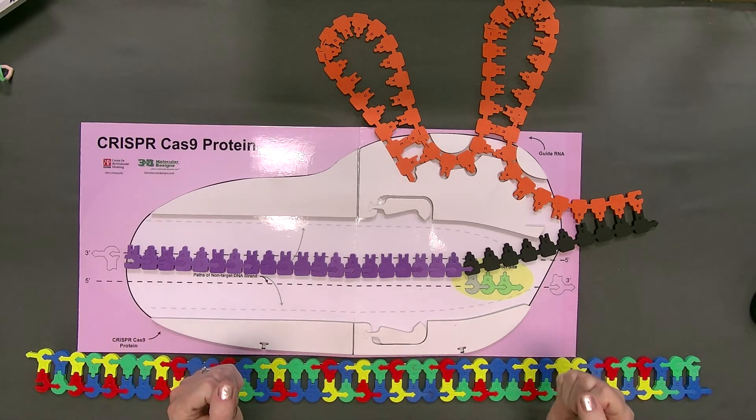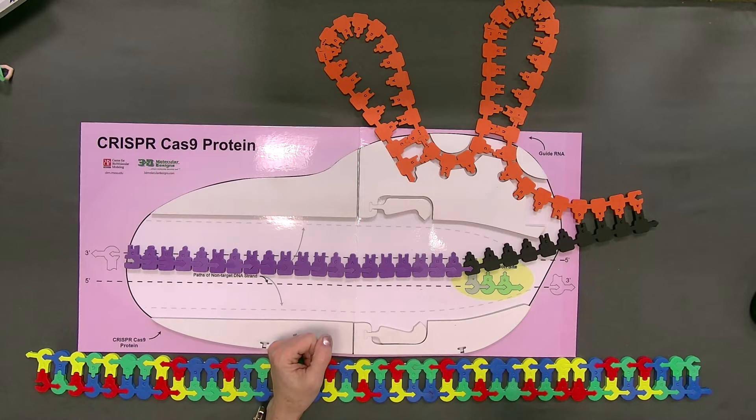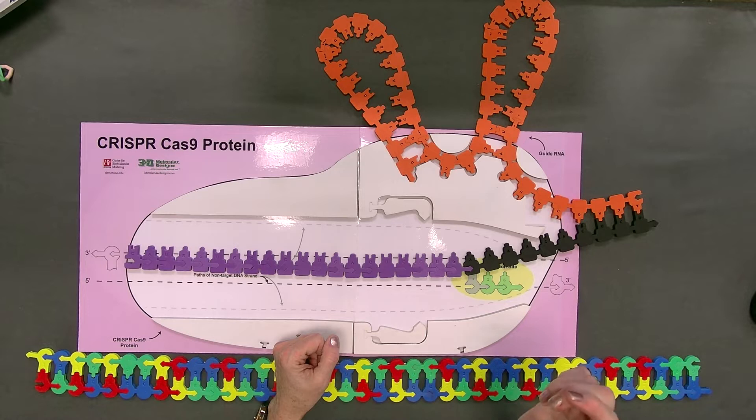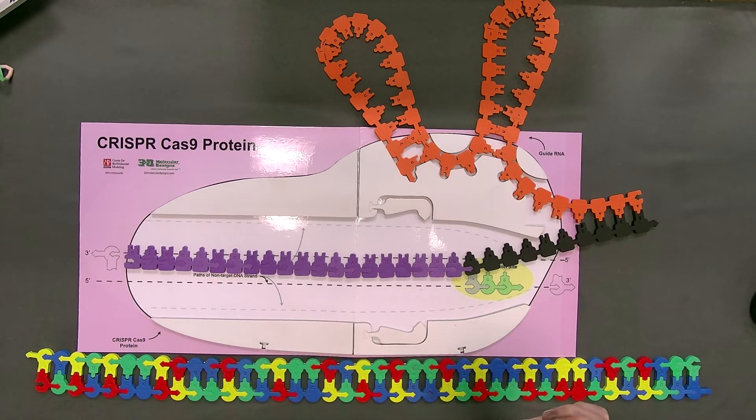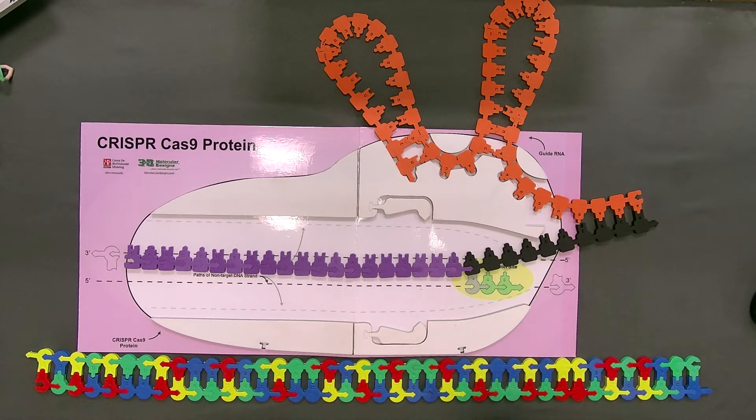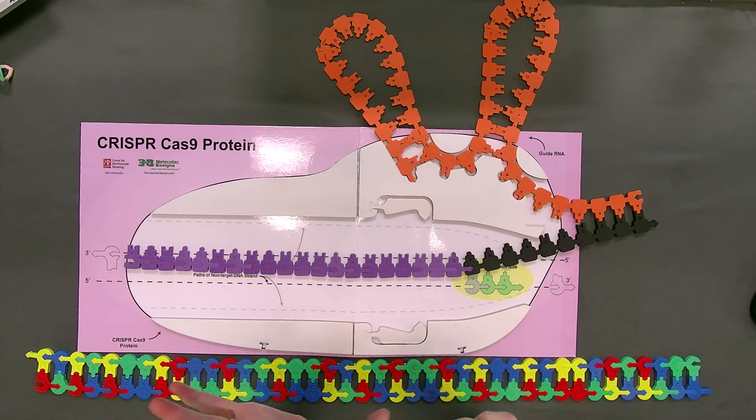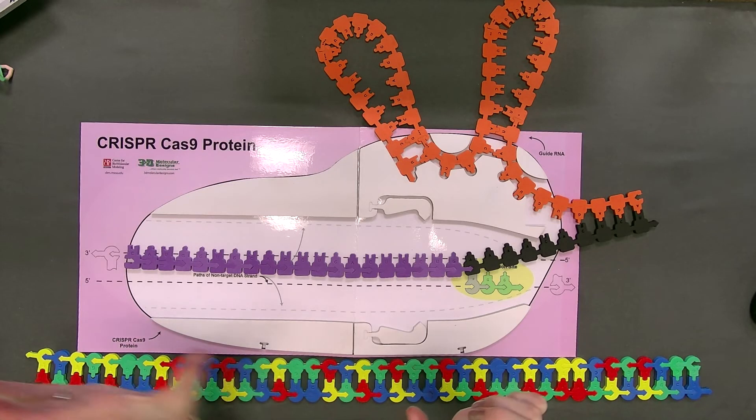There's a protospacer adjacent motif, which is NGG. So it finds any NGG in the genome and then it snips out a piece next to that. What that does is it gives it a bookmark so that we can look for NGGs, which are all over the place. But we look for NGGs, and then it checks to see if the adjacent sequence is complementary to the spacer.